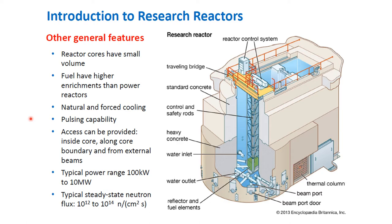Typically, the power range for research reactors is around 100 kilowatts to 10 megawatts, with a typical steady-state neutron flux of around 10^12 to 10^14 neutrons per centimeter squared per second.